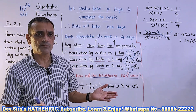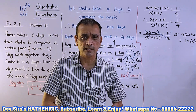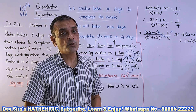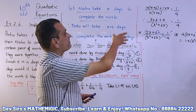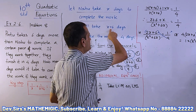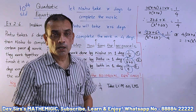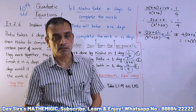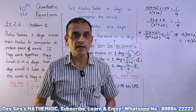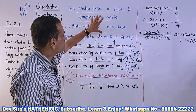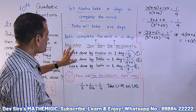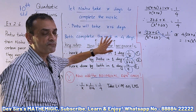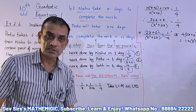Both together complete the work in four days. Now the important point is: you cannot add these equations and say x plus (x+6) equals four. If you try solving that equation, you will get x as a negative answer. So how do we form a quadratic equation from this? We form the reciprocals of all these equations.